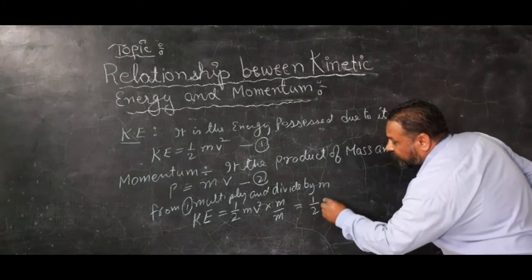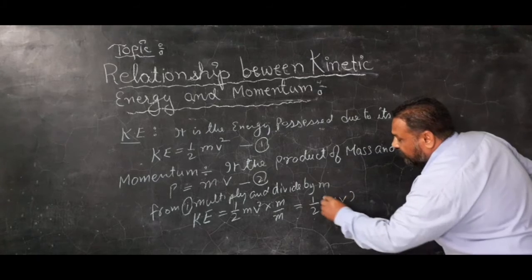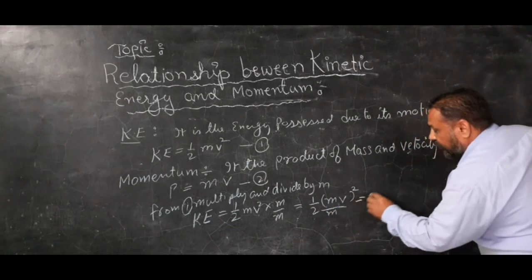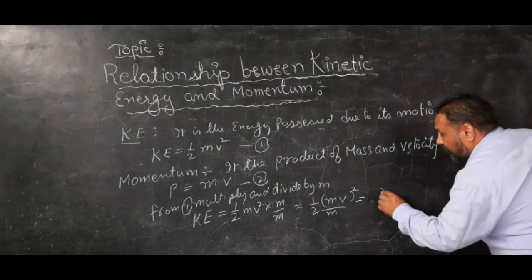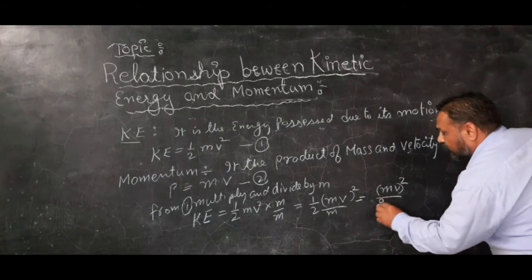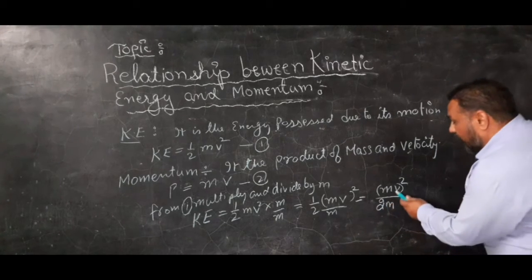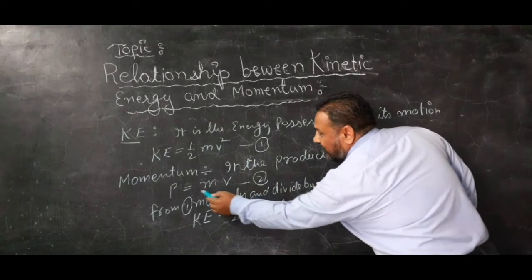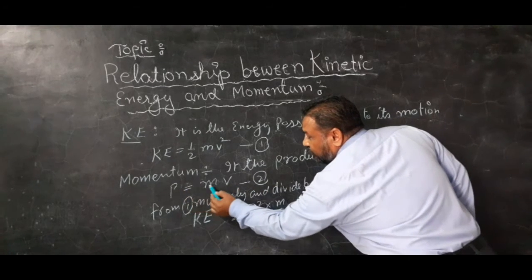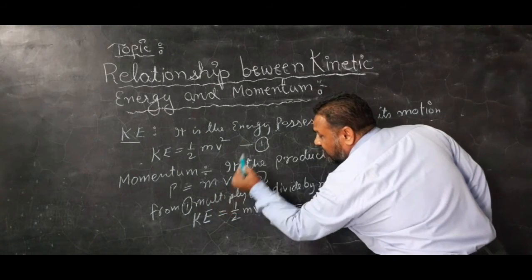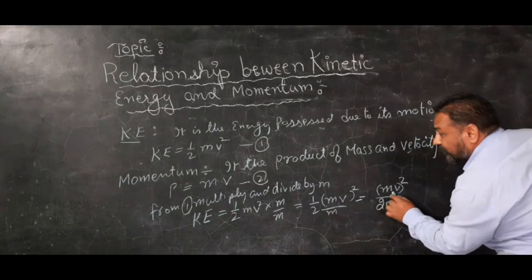What you will get is half mv whole squared over m, that means you will get mv squared over 2m. Now what is the value of mv? Momentum equals the product of mass and velocity, so we will use that.